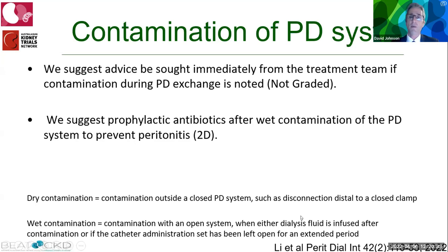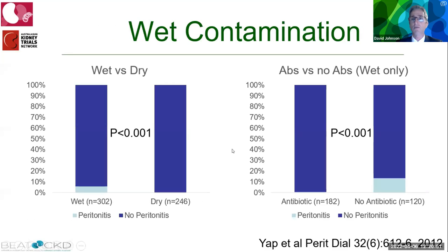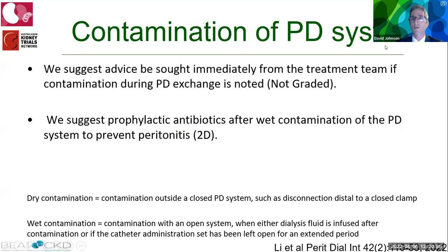New refined recommendations address dry and wet contamination. Dry contamination is contamination outside a closed PD system — such as a disconnection distal to the closed system. Wet contamination is contamination of an open system where either dialysis fluid has been infused after contamination or the catheter/administration set has been left open for an extended period. The guidelines recommend seeking advice from the treating team whenever a contamination episode occurs, and suggest prophylactic antibiotics after wet contamination to prevent peritonitis.